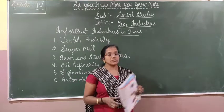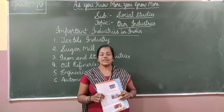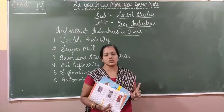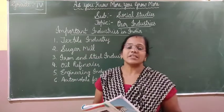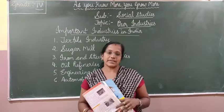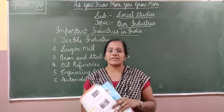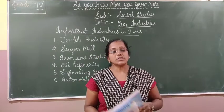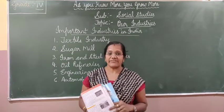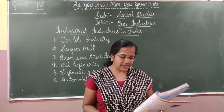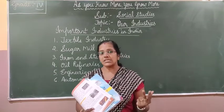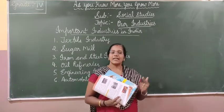We also learnt about the classification of industries. Classification of industries on the basis of raw materials gives two types: agro-based industries and mineral-based industries. Agro-based industries get raw materials from agriculture, while mineral-based industries get raw materials from minerals. Classification on the basis of investment and production divides industries into three types: cottage industries, small scale industries, and large scale industries.